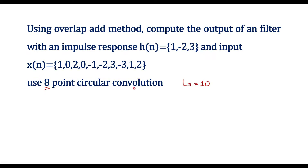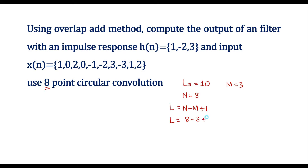We are using 8-point circular convolution, so N = 8. We find L using the formula L = N - M + 1. Here M is the length of h[n], which has 3 samples, so M = 3. Therefore L = 8 - 3 + 1 = 6.